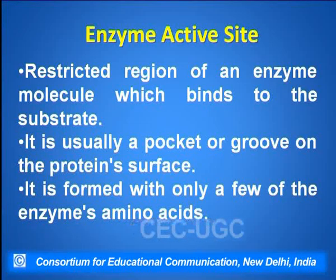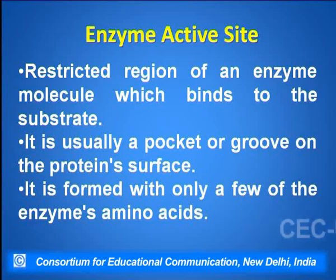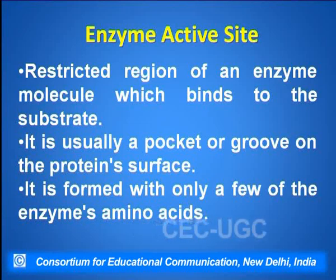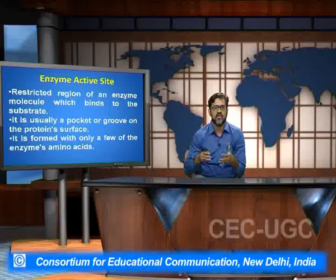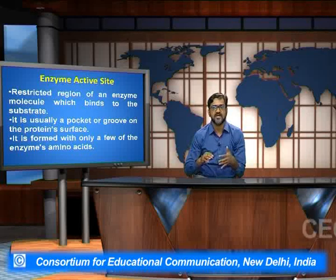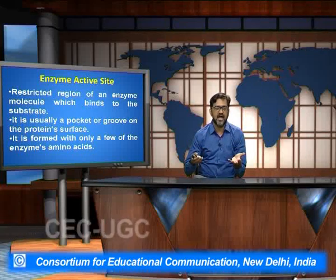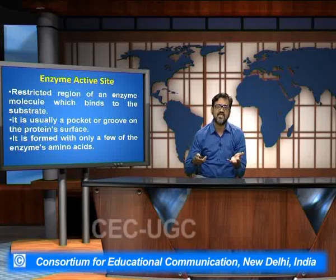The enzyme active sites are the restricted regions of the enzymes to which the substrate binds, and subsequently the products are formed from these enzyme-substrate complexes. These are basically the pockets or groups in the protein surfaces, and one or many enzyme amino acids can fall under this enzyme active site.